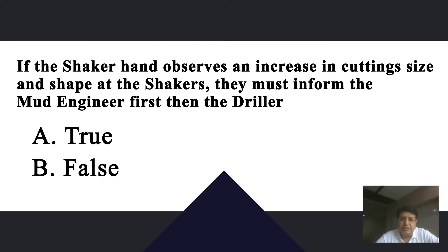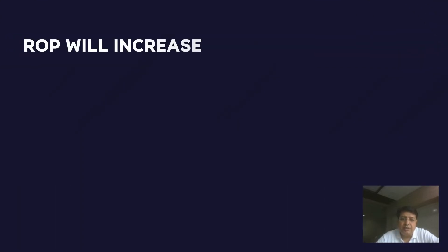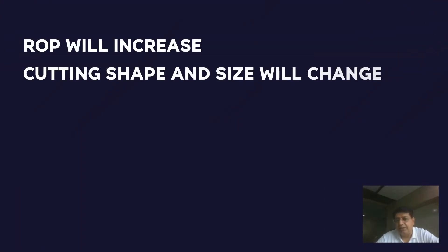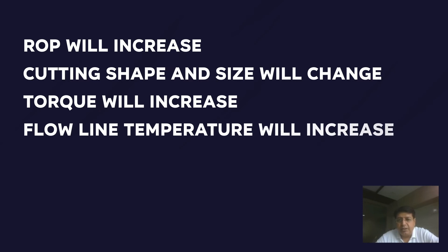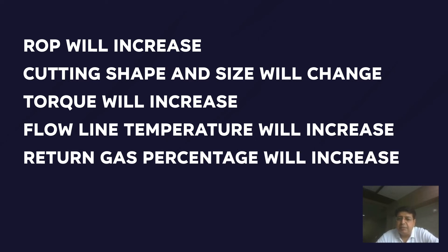Those warning signs are: first, ROP will increase; then cutting shape and size will change; then torque will increase because of the bigger size of cuttings; and temperature of the flow line and wellbore will increase because the pressure is increasing. Then the return gas percentage — it may be connection gas, trip gas, or background gas — all types of gas in the wellbore will increase. This indicates that wellbore pressure or formation pressure is increasing.